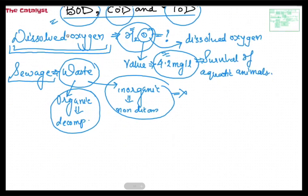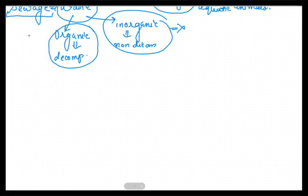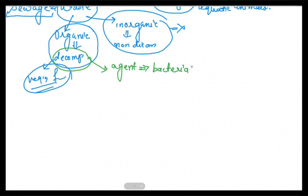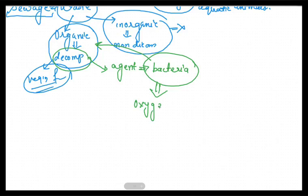Organic waste is waste obtained from nature — natural things like vegetable peels, fruits, leaves — things obtained from nature which can be decomposed. To decompose them, we will be requiring a decomposing agent. That decomposing agent is known as bacteria.